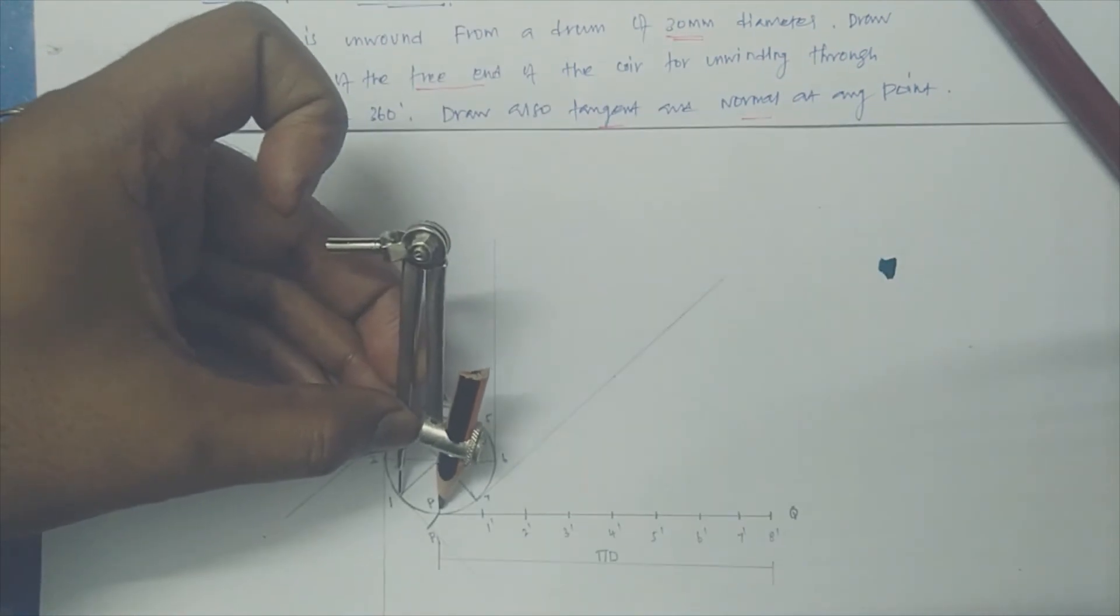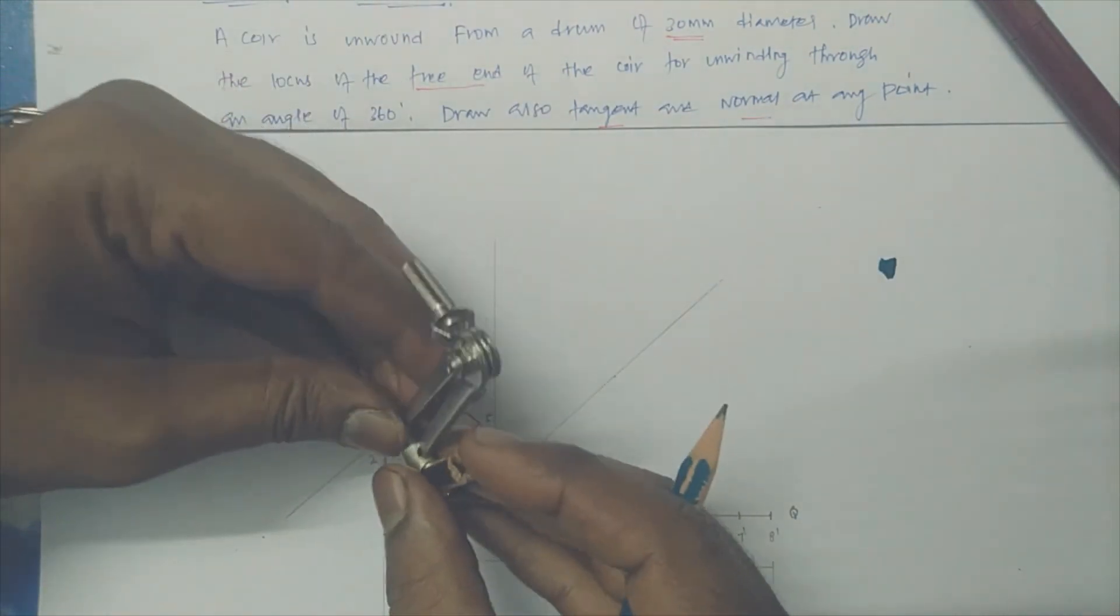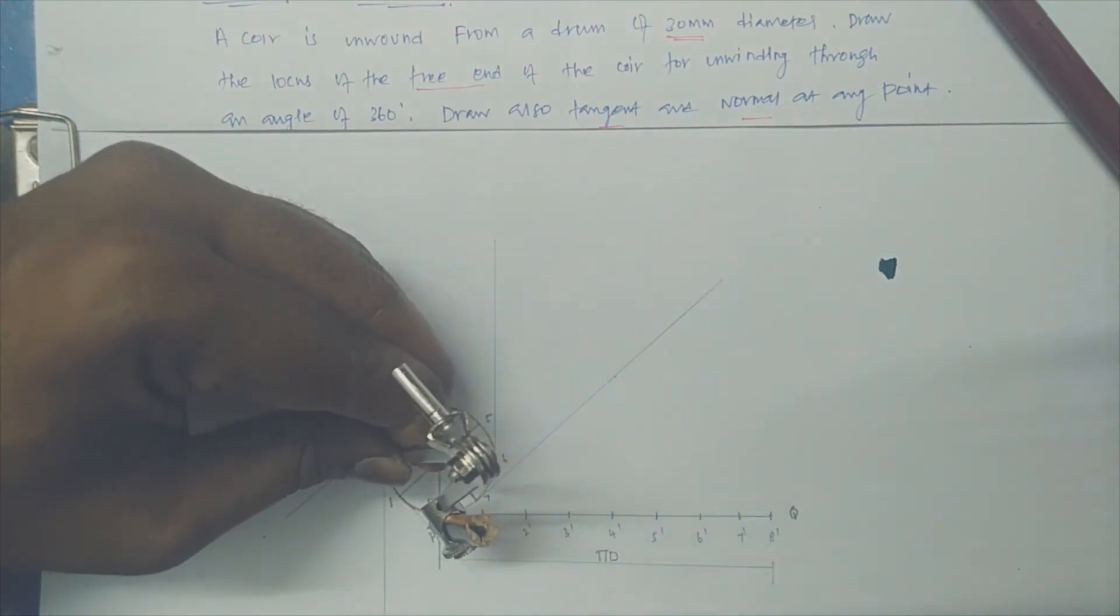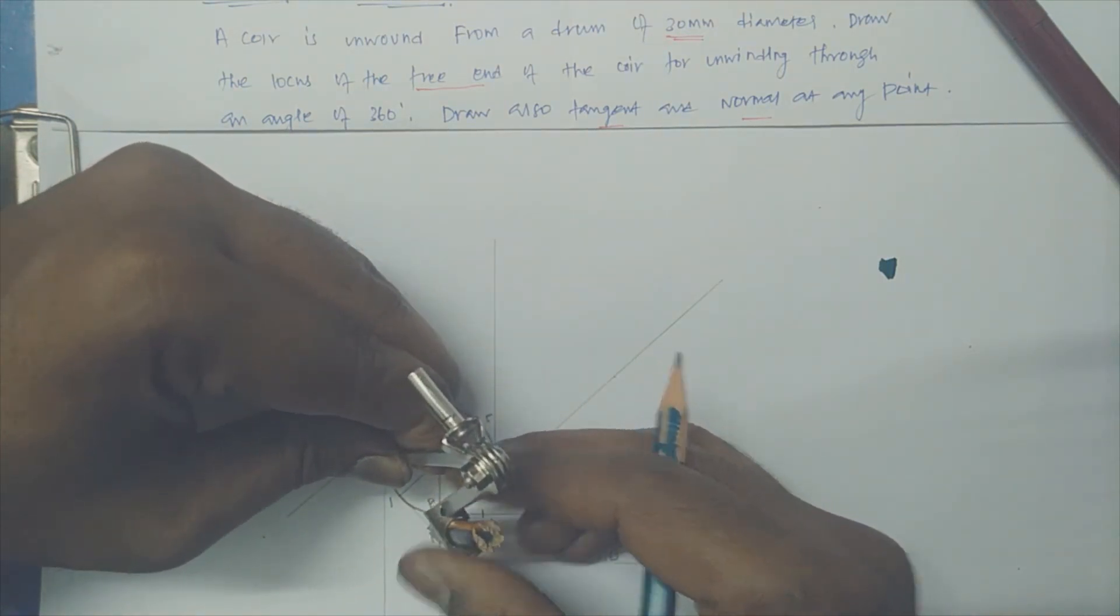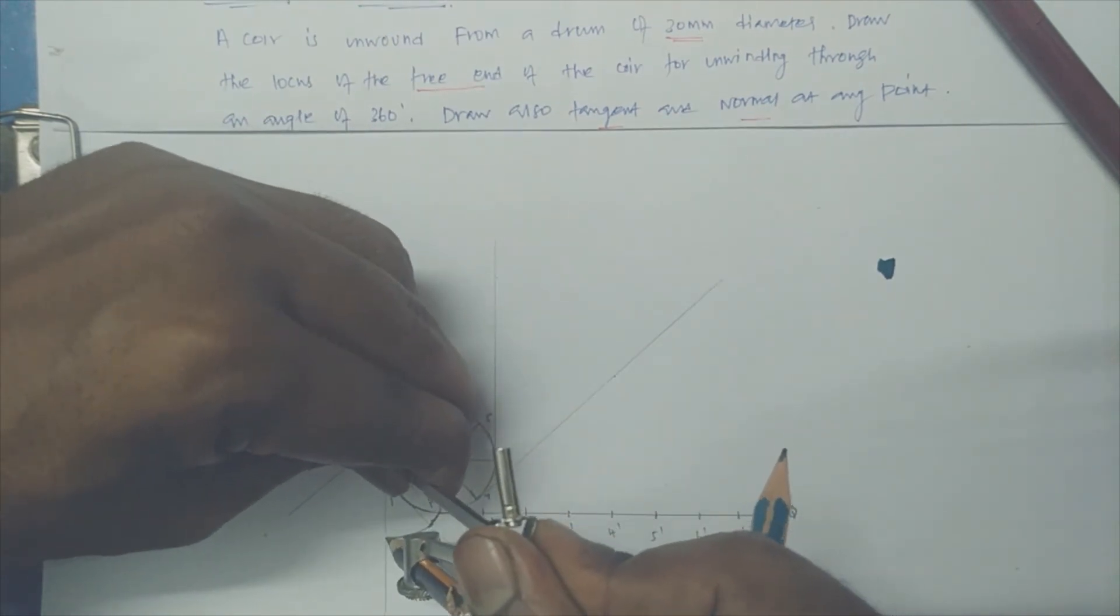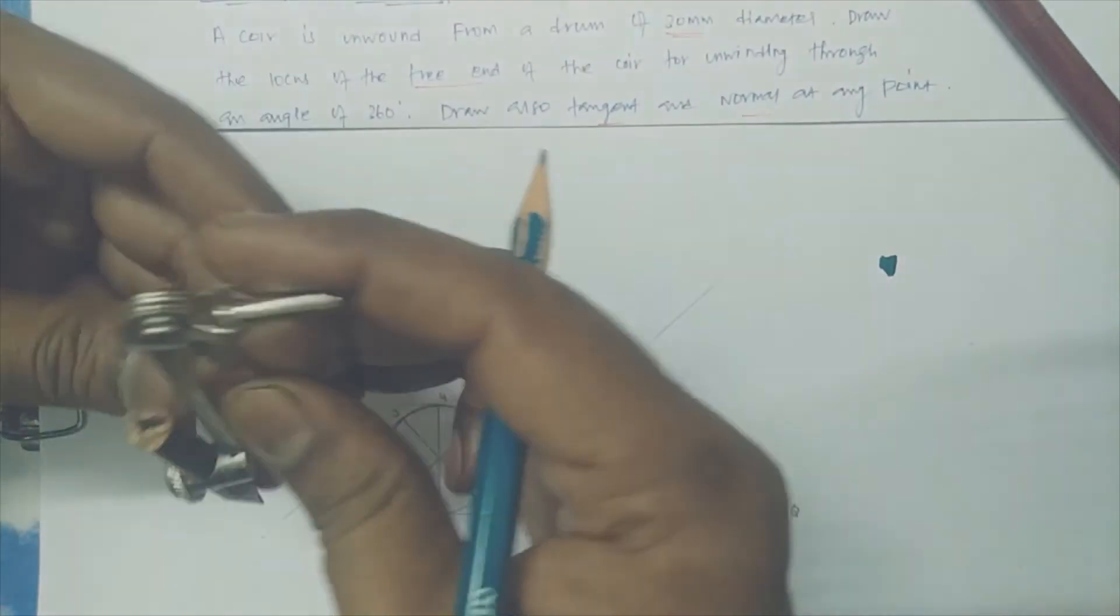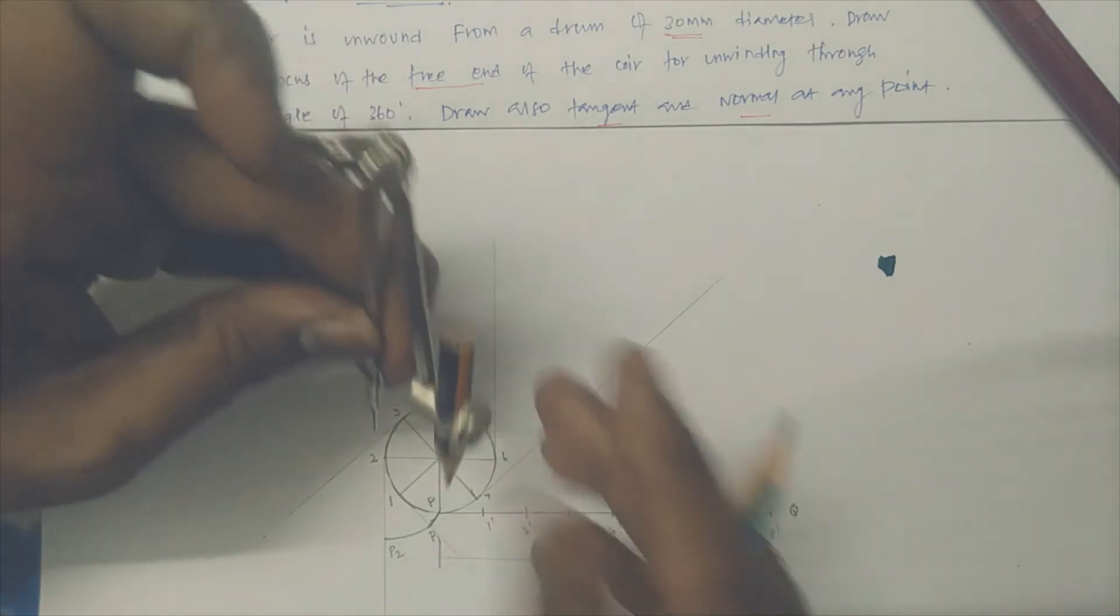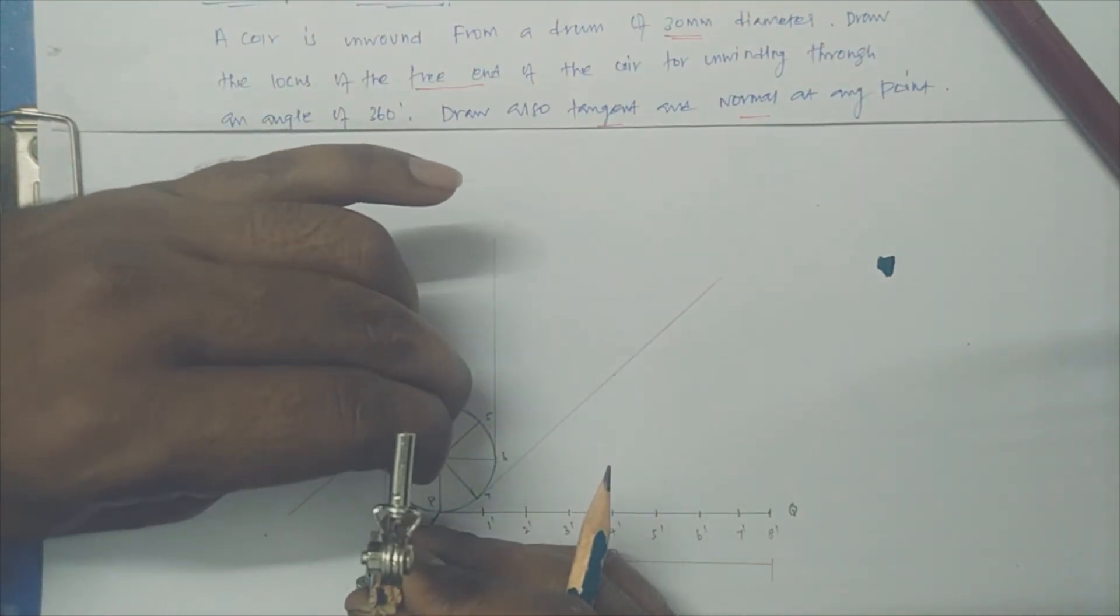See, 1 as a center, P as a radius, I made one small arc. Similarly now I am just keeping 2 as a center, P1 as a radius. 2 as a center, P1 as a radius, I just mark this. Now again keep, so here it is P2.